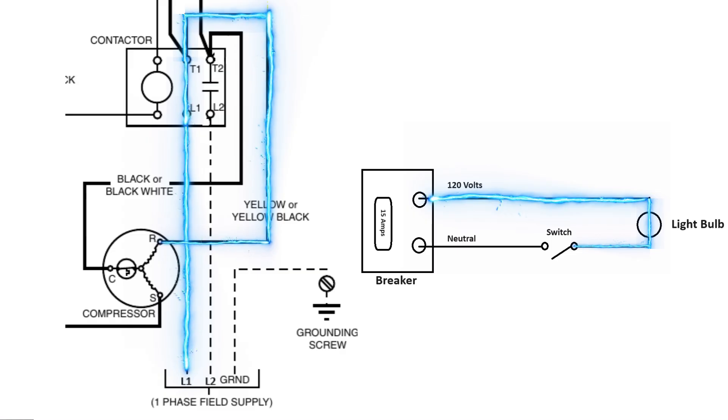But carrying on, we see as we trace the common line, we go all the way back to T2 on the top side of the contactor. And as we continue, what do we come to? We come to an open switch. We have an open drawbridge. And this is why our compressor is not running.